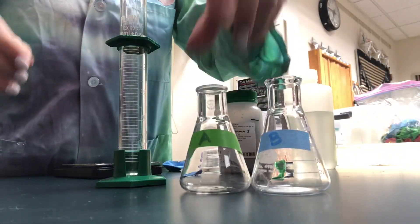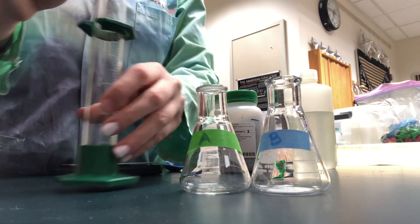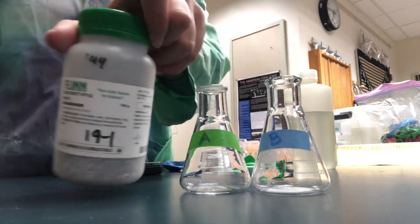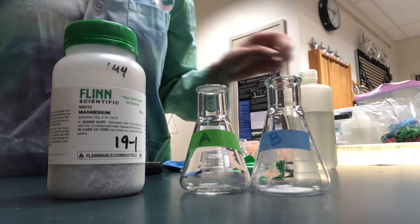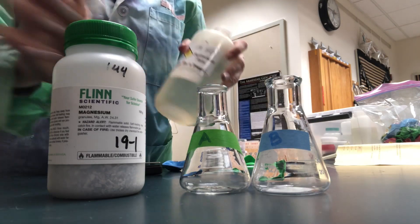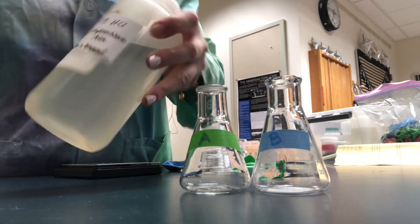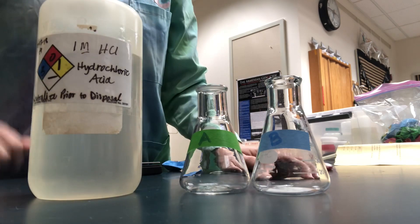In this lab, we're going to be using two Erlenmeyer flasks, a graduated cylinder, magnesium shavings or magnesium turnings, and one molar hydrochloric acid, HCl.